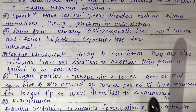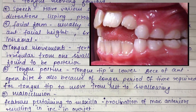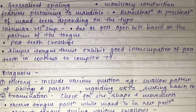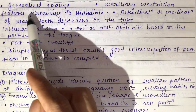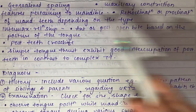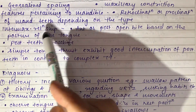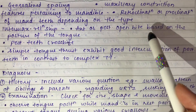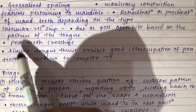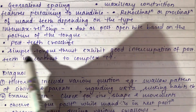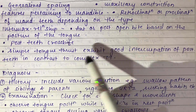There is presence of anterior open bite. Malocclusion features related to the maxilla include proclination of maxillary anteriors resulting in increased overjet, generalized spacing, and constriction of the maxillary arch. For the mandible, there is retroclination or proclination of mandibular teeth depending on the type. Intermaxillary relationship shows anterior or posterior open bite based on tongue posture, along with possible posterior crossbite. In simple tongue thrust, good intercuspation of posterior teeth is present, in contrast to complex tongue thrusting.